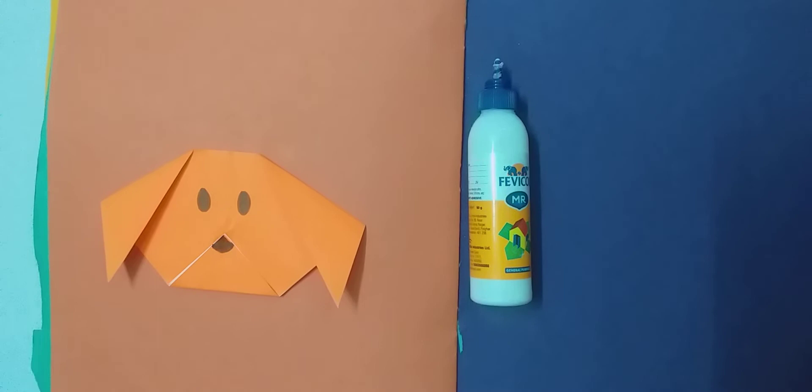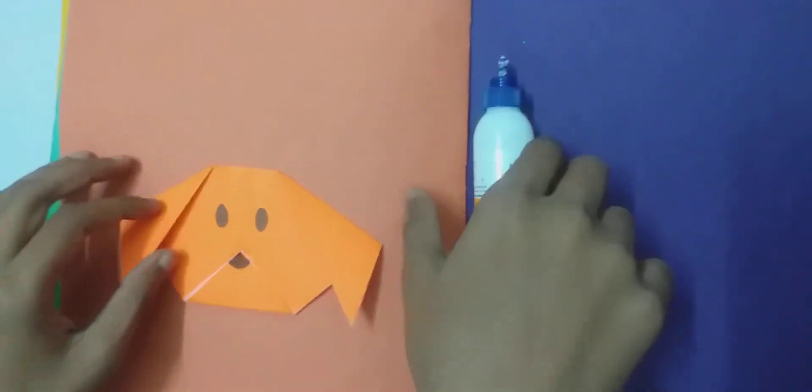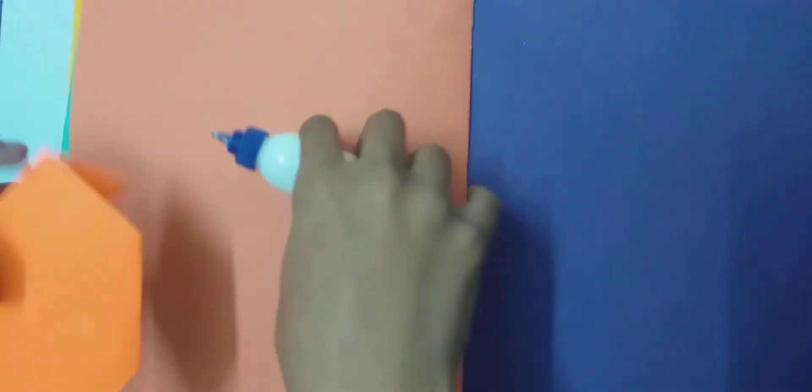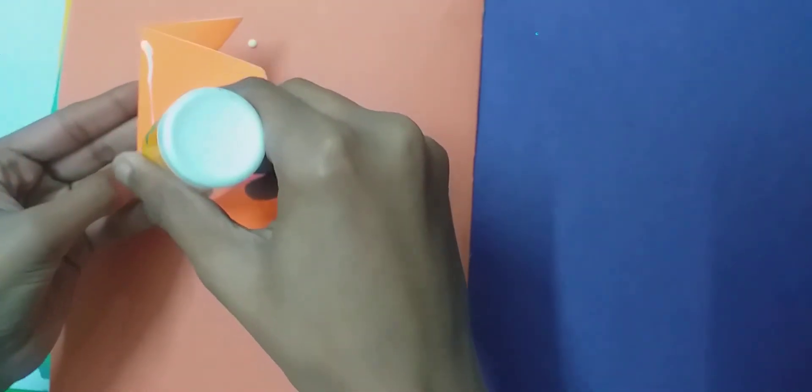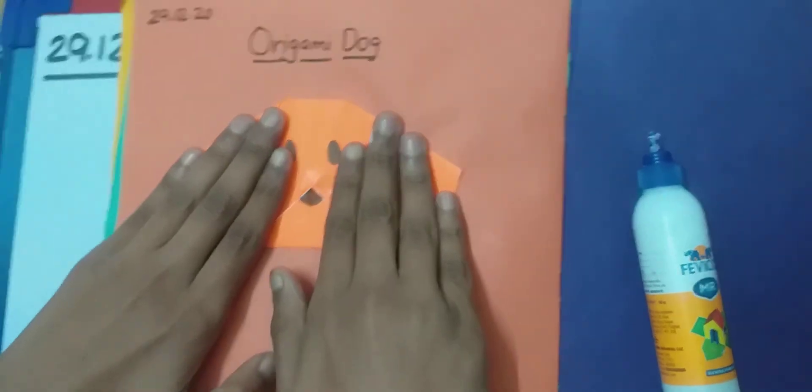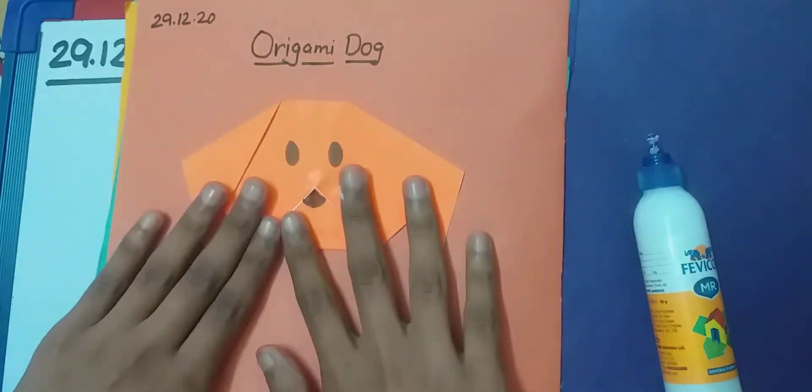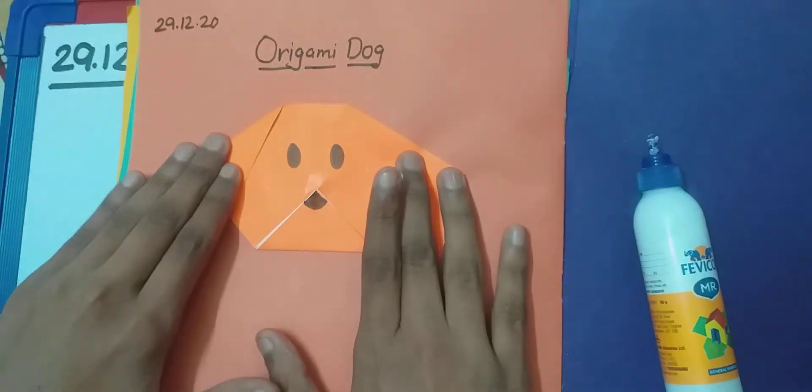Now take your scrapbook and paste this dog in your scrapbook. Look at here, our origami dog is ready.